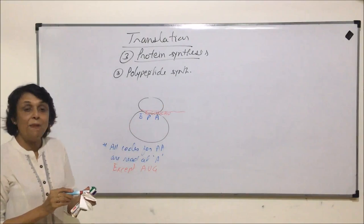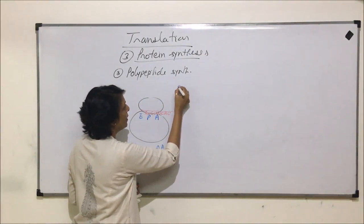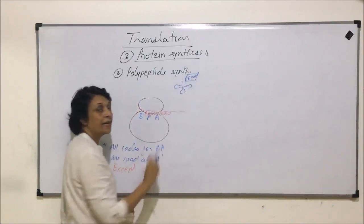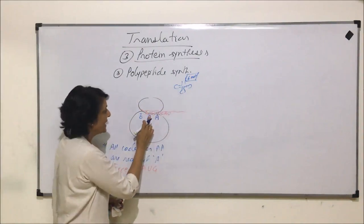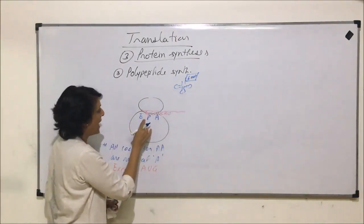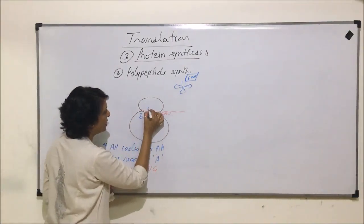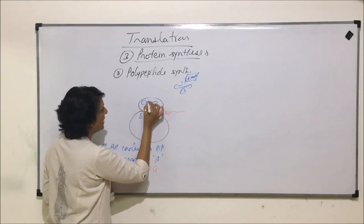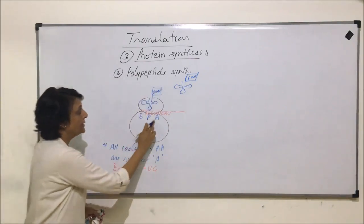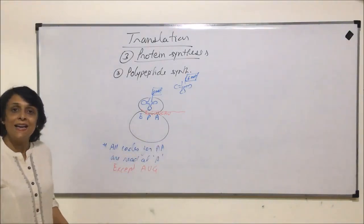First code is read by tRNA and that tRNA is going to bring methionine. So what is attached here is FMET. This FMET containing tRNA can come and bind at the site P because the anticodon arm actually reads the code at site P. So now this tRNA comes here. This is the tRNA having the first, that is FMET, methionine.